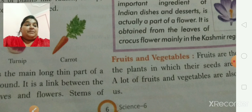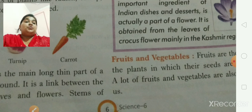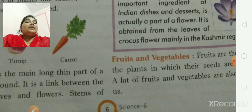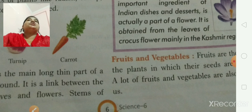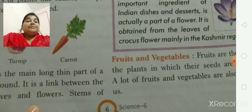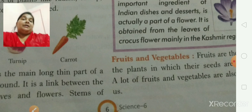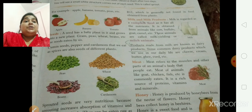The next part is fruits and vegetables. Fruits are the parts of a plant in which their seeds are enclosed. Lots of fruits and vegetables are eaten raw. Some examples are: apple, banana, tomato, peas, etc.